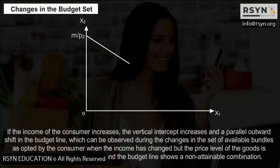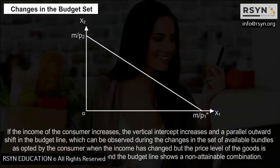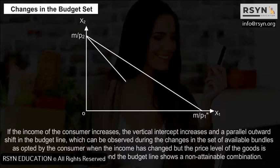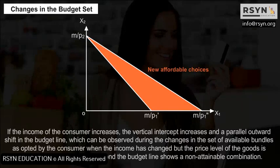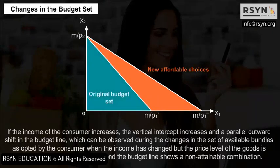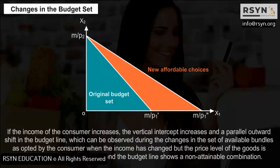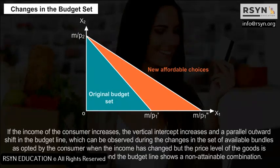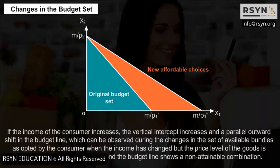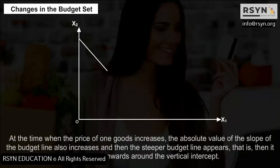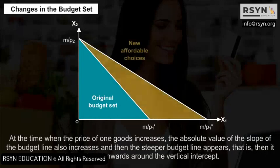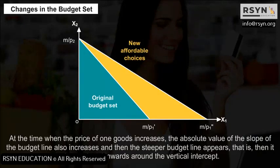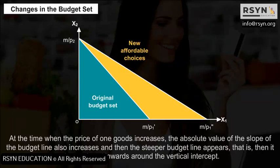Changes in the Budget Set: If the income of the consumer increases, the vertical intercept increases and there is a parallel outward shift in the budget line, observable when income changes but the price level of the goods is unchanged. Any point beyond the budget line shows a non-attainable combination. When the price of one good increases, the absolute value of the slope of the budget line also increases, the budget line becomes steeper, and it shows a pivotal inward shift around the vertical intercept.